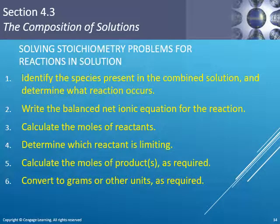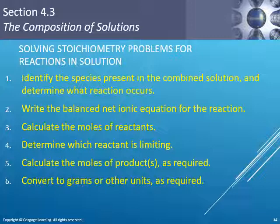Now we put everything together with solution stoichiometry. We can use reaction prediction to determine what substances will be found after the reaction occurs — whether a precipitate, gas, or water forms. We can write the balanced net ionic equation, calculate moles of each reactant, determine the limiting reactant, calculate moles or grams of product, and find the excess reactant remaining — including the excess ions still in solution.